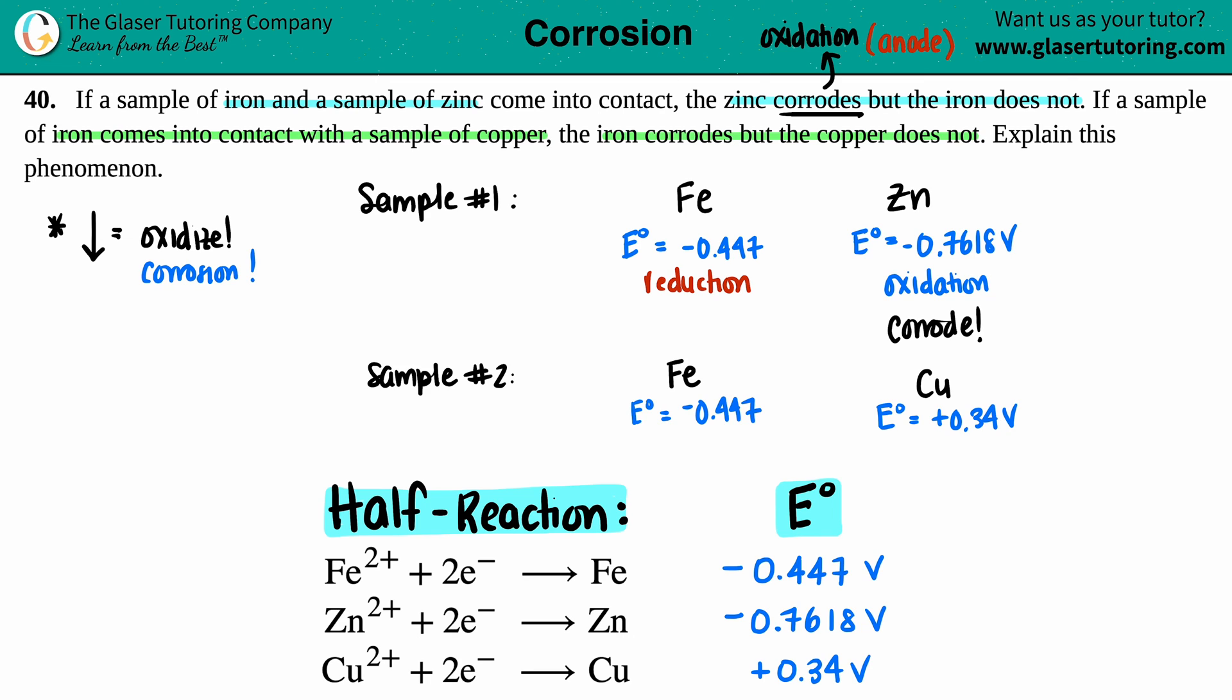So the lower one is going to be oxidation, the higher one is going to be reduction. In this case, the iron, since it's lower, is going to be oxidation and the copper is going to be reduction. This one is now undergoing oxidation, and because it's undergoing oxidation, it is going to corrode.